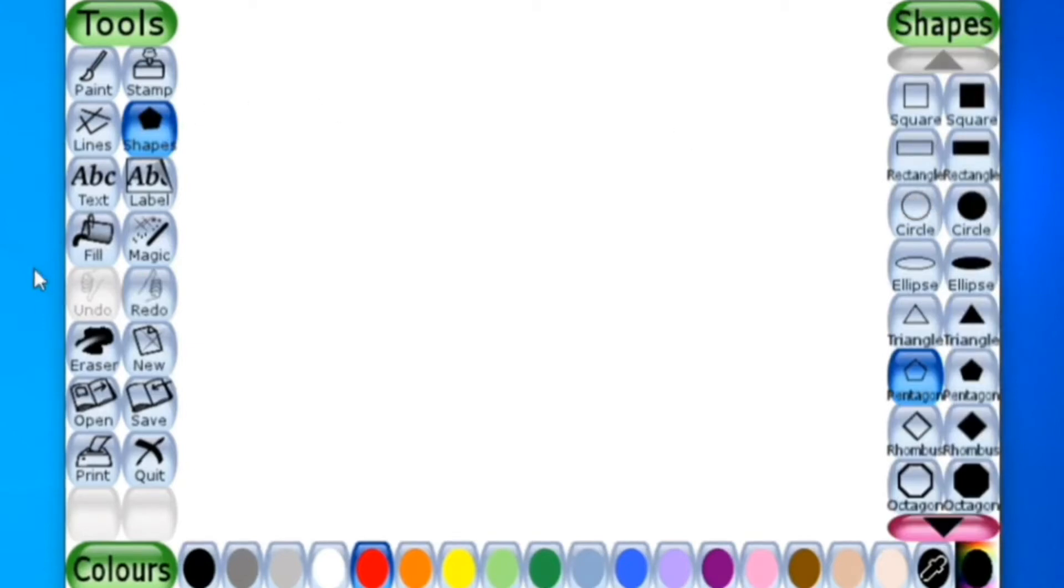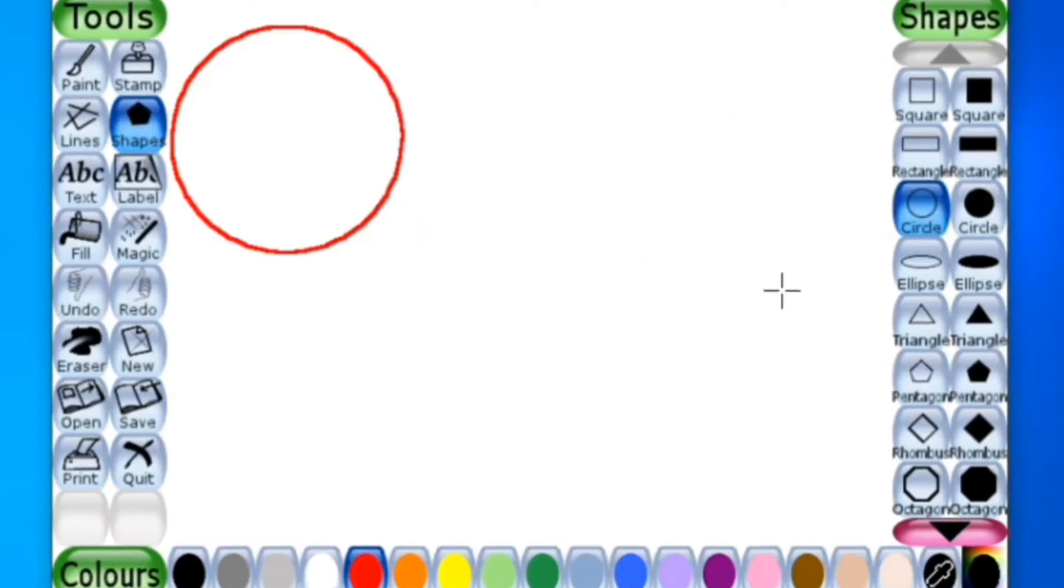I'm going to draw different shapes. For that I'll select this shape tool. Now you can see children I am drawing different shapes for you.